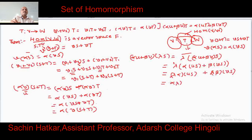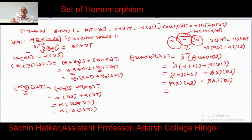Expanding: λ·α·S(U) + λ·β·S(V). Since S(U) and S(V) are elements of W and W is a vector space, we apply the third condition of vector space: α(βv) = αβ·v. Therefore this becomes α·(λS)(U) + β·(λS)(V). The condition of homomorphism is satisfied, showing that λS also belongs to the set of homomorphisms from V into W.